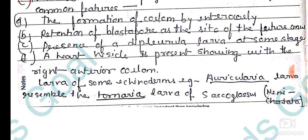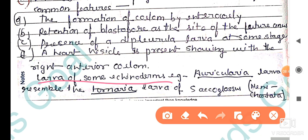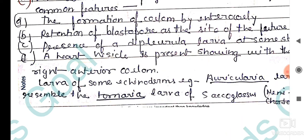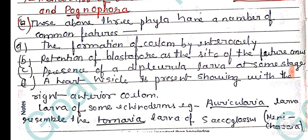A heart vesicle is present along with the right anterior coelom. The larva of echinoderms is the auricularia larva. The auricularia larva resembles the tornaria larva of Saccoglossus, which is a hemichordate.